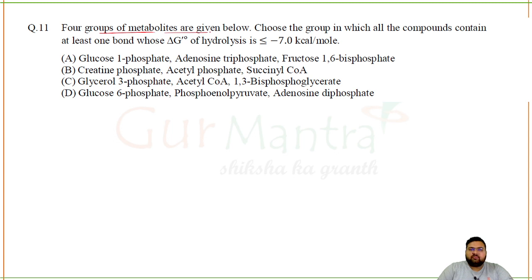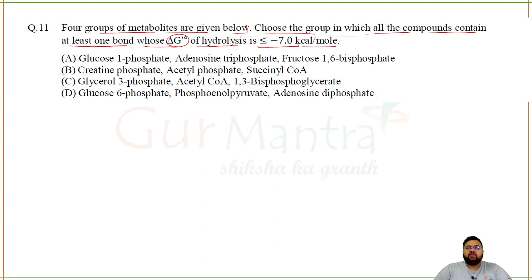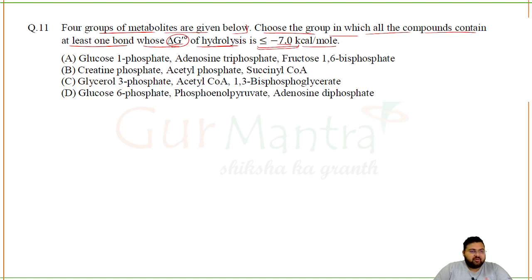Four groups of metabolites are given. Choose the group in which all compounds contain at least one bond whose delta G° of hydrolysis is ≤ −7.0 kcal/mol. The group containing creatine phosphate, acetyl phosphate, and succinyl-CoA all have bonds whose delta G° of hydrolysis meets this criterion.